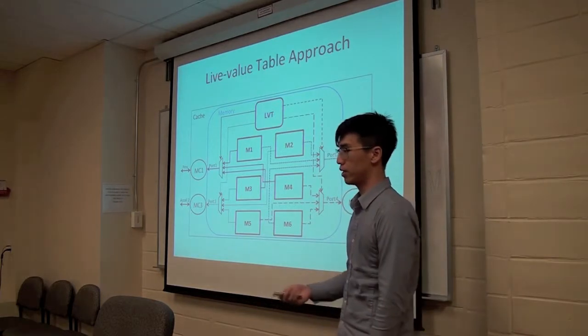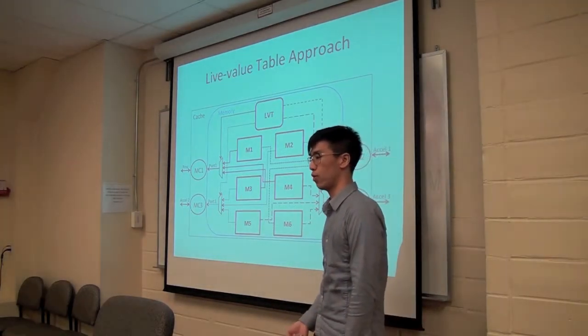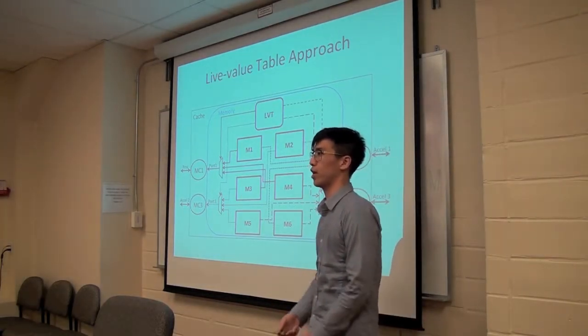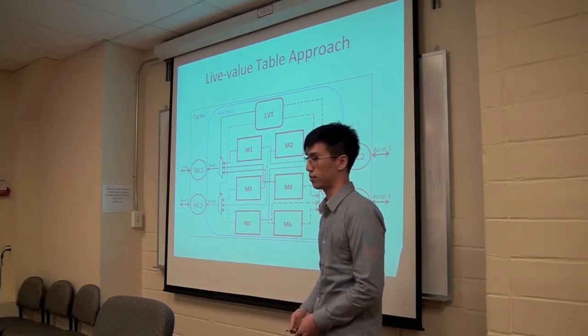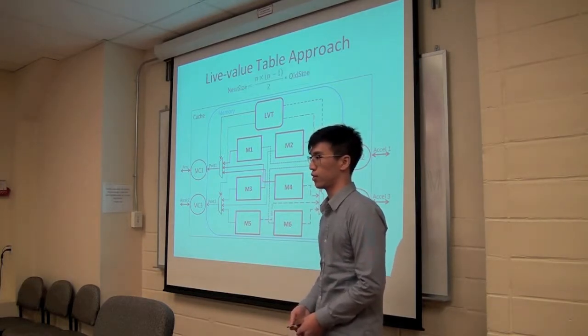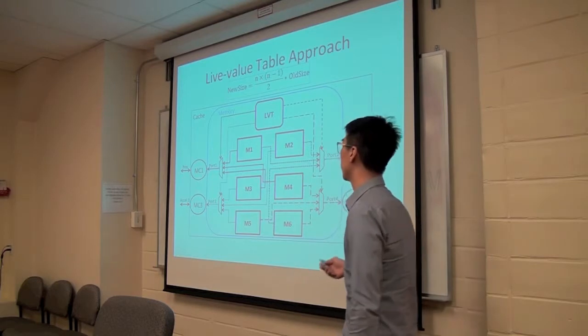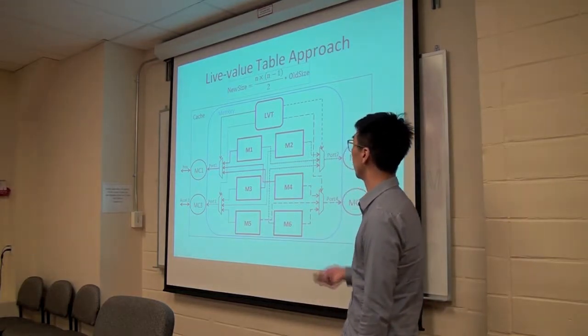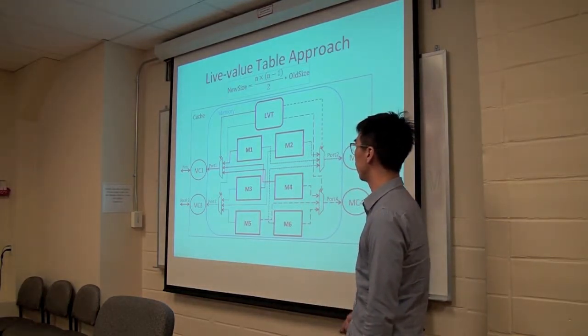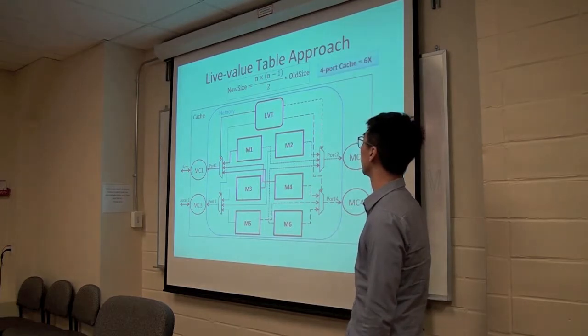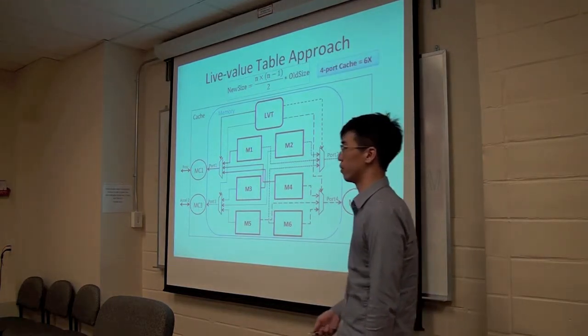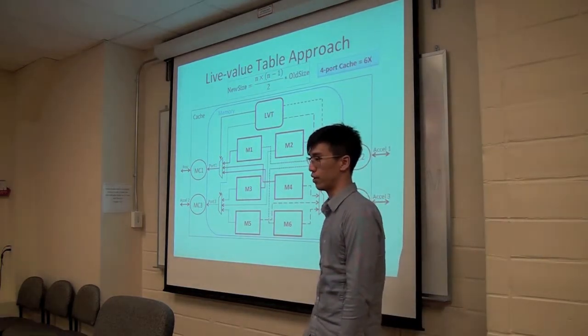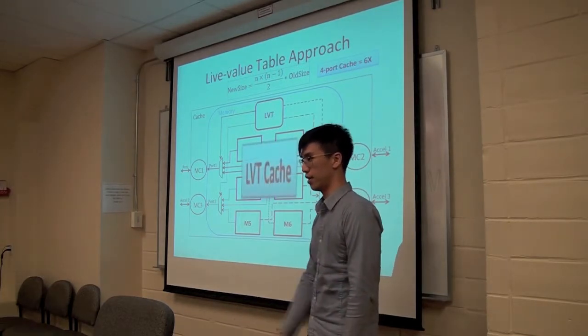So we make this into a cache by attaching a memory controller at each one of the ports which subsequently connects to either a processor or an accelerator. So due to replication, this cache scales with the following equation and you can see that a four-port cache can be created by 6x amount of memories and we call this the LVT cache.